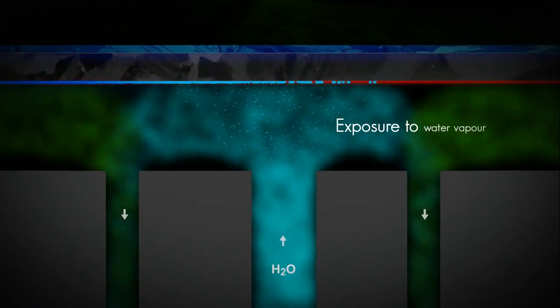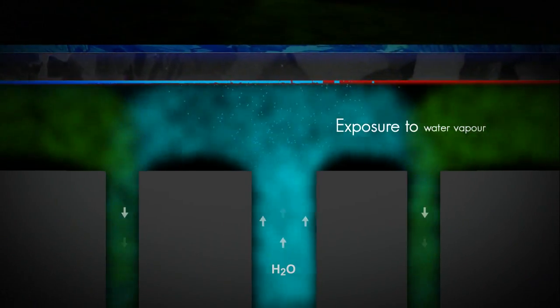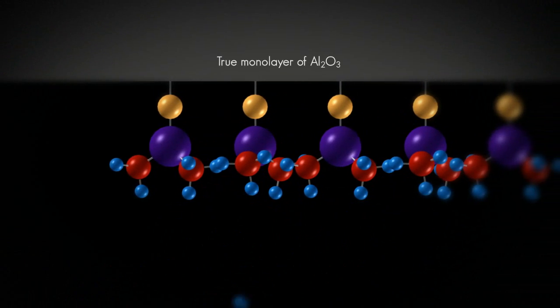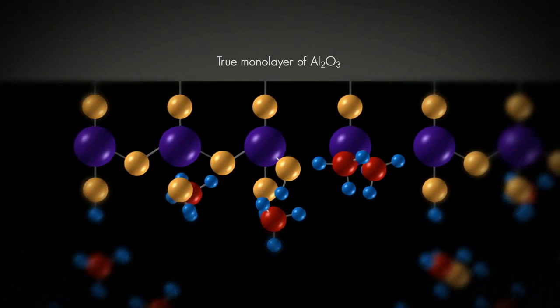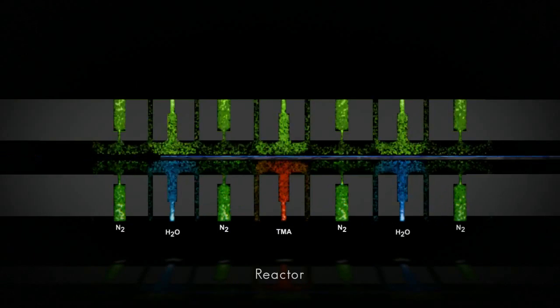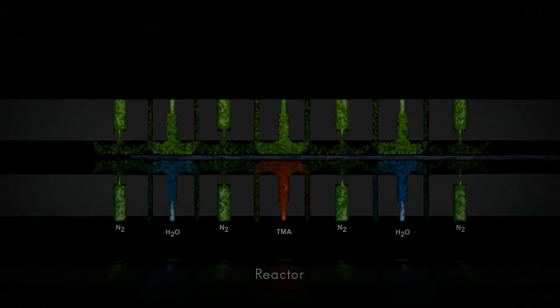In the second reactor compartment, a chemical reaction results in the requested monolayer of aluminium oxide. The result is true ALD at a high speed. The process is repeated to produce a corresponding number of atomic layers.